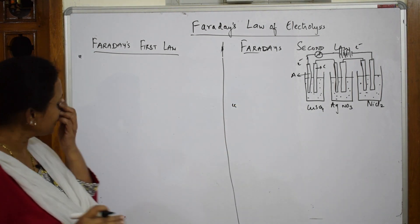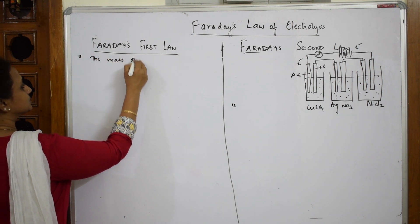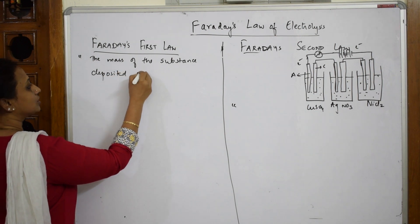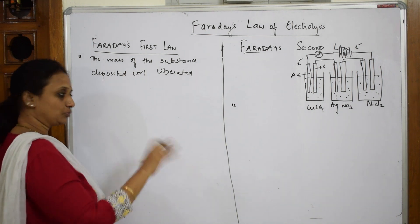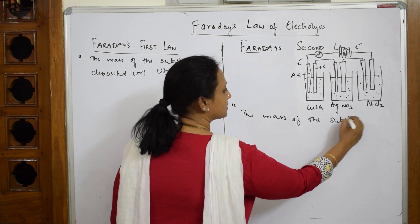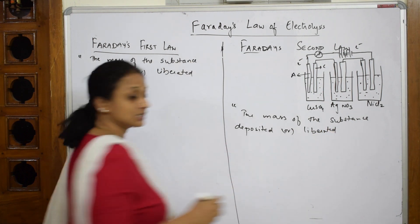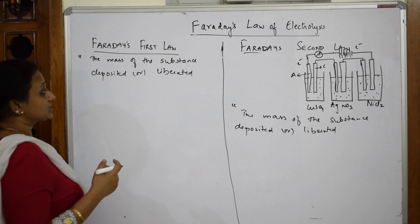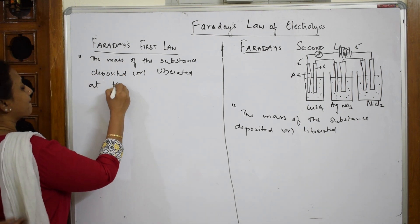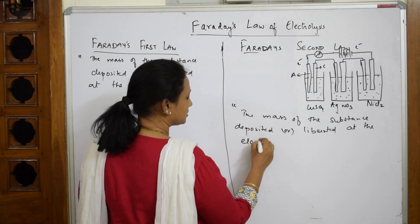Faraday's first law states that the mass of the substance deposited or liberated at the electrodes is directly proportional to the charge passed. Both laws start similarly — the mass of the substance deposited or liberated at the electrodes — but differ slightly from here.